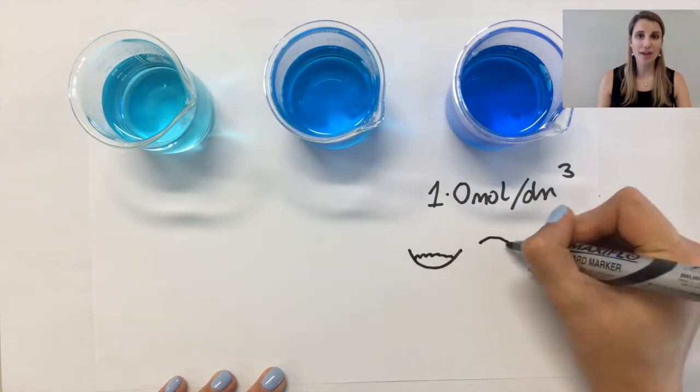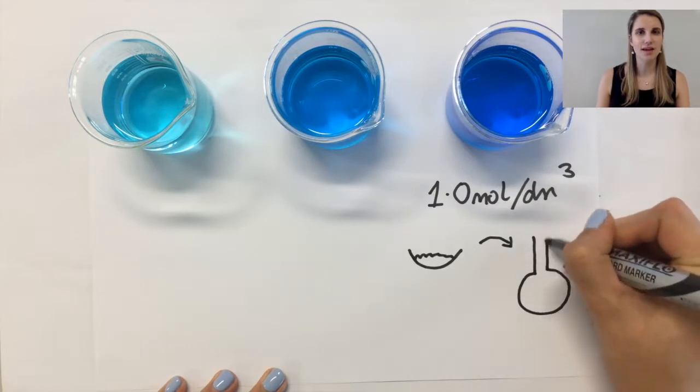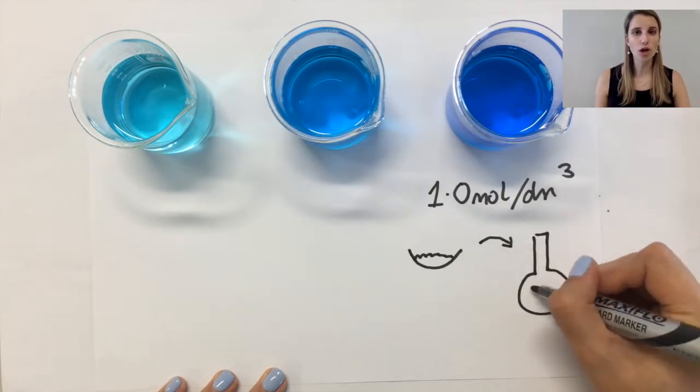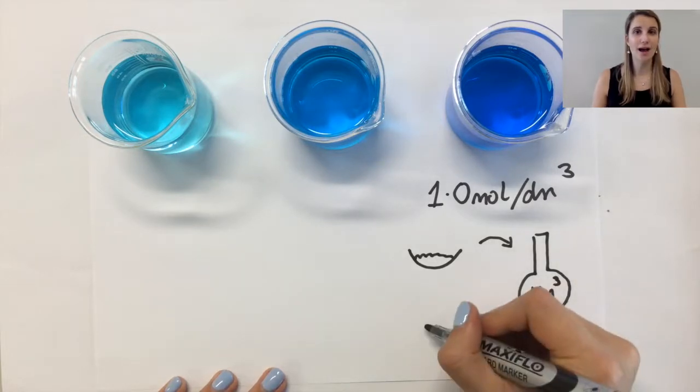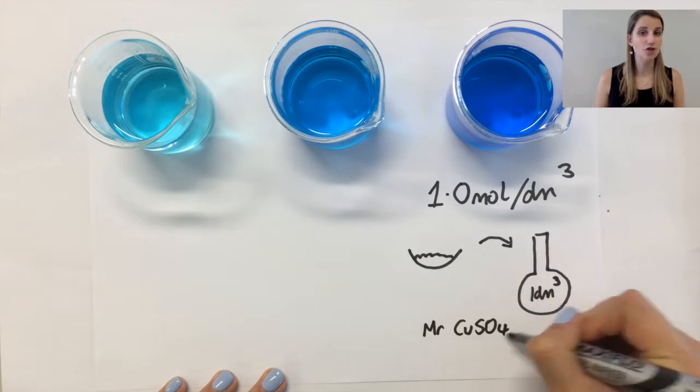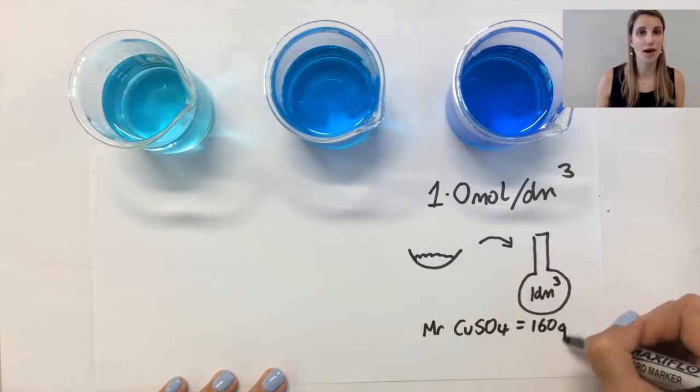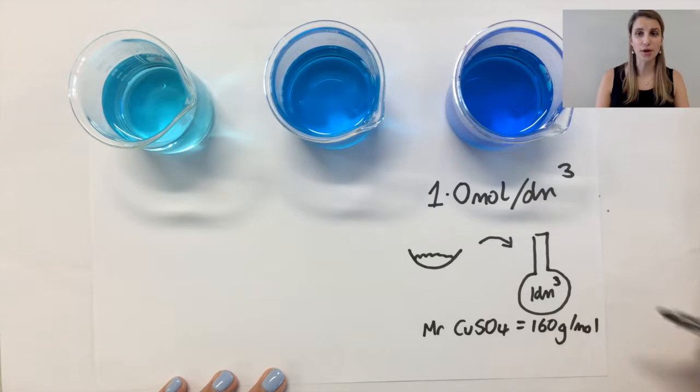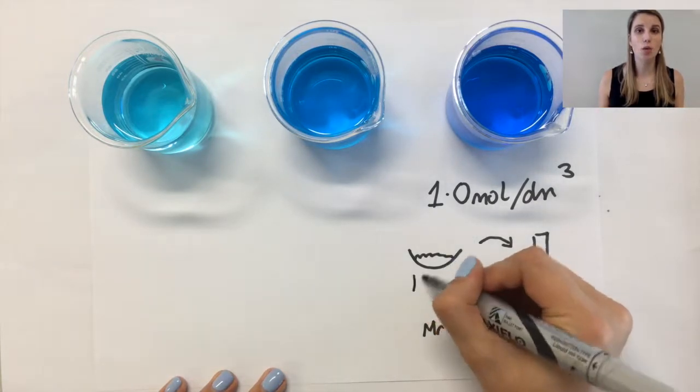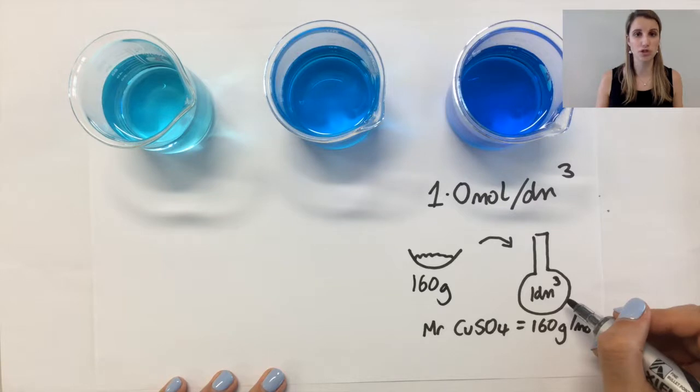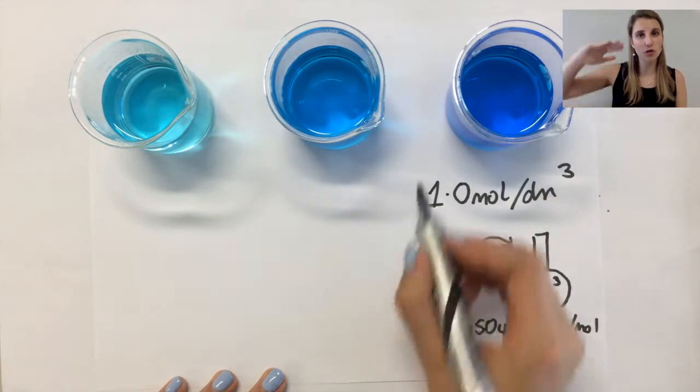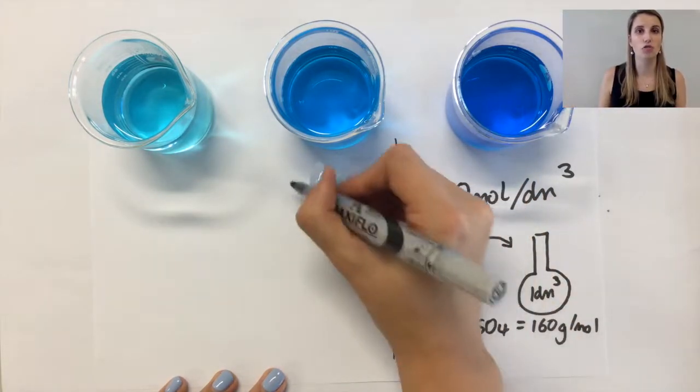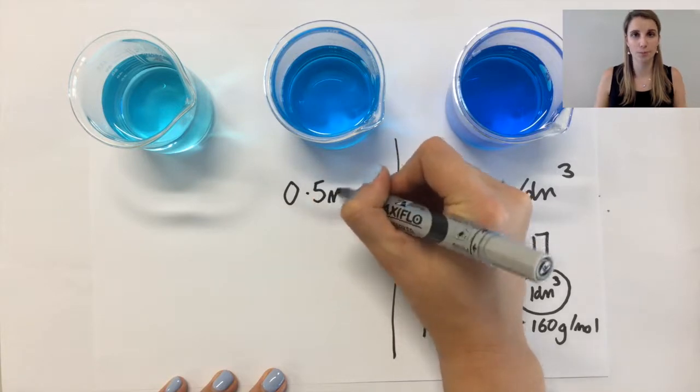So the way that I can work out what I've used to make that is by working out how much one mole of copper sulphate will weigh. So to do that you work out its molar mass, which is 160 grams per mole if you add up all the numbers on the periodic table. So what that means is I've taken 160 grams of copper sulphate, or one mole of copper sulphate, I've put it into a flask and I've dissolved it to make a solution of one decimetre cubed overall.